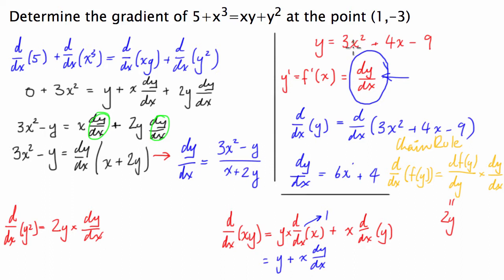So finally guys we have to evaluate this derivative at 1 comma negative 3. So finally we're going to say dy/dx evaluated at 1 comma negative 3. So this is just a case of subbing in the numbers guys so we're going to have 1 is for x so we have 3 times 1 squared take and y is negative 3 so we take negative 3, all divided by x is 1 plus 2 times negative 3.